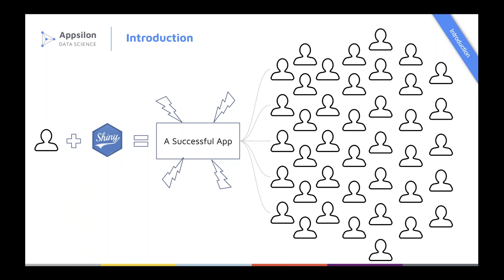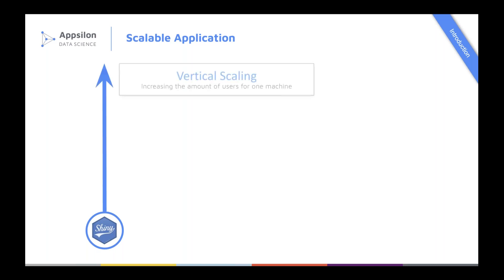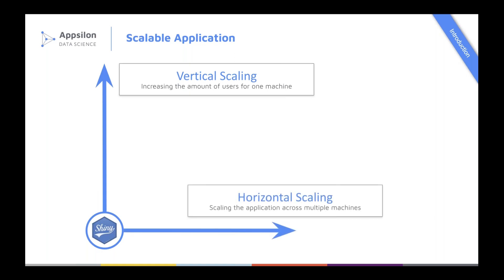The fact is that Shiny is fast. RStudio Connect is fast and allows you to scale even up to 10,000 users. But it needs to be implemented in a given way with a given architecture. There are two ways you can scale your application. The first one is vertical scaling — increasing the amount of users for one machine. The other is horizontal scaling, which means adding as many machines as you want. You should first work on vertical scaling so that your application is fast and robust, and then you can add as many machines as you want. Otherwise, you're going to use a lot of resources.